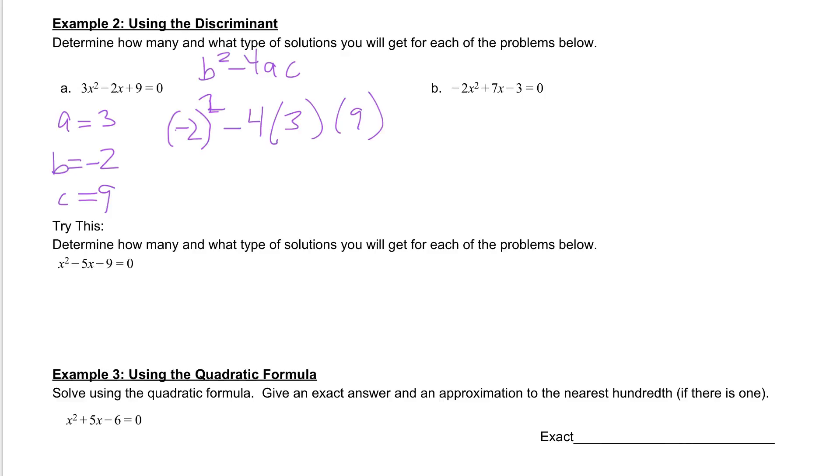You should see that you get an answer of negative 104. Because our discriminant is a negative number, that tells us that we will have no real solutions.